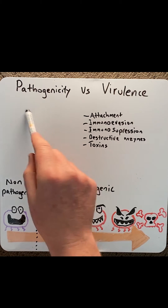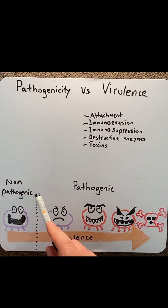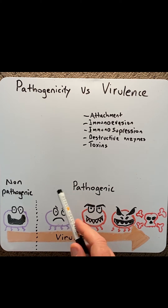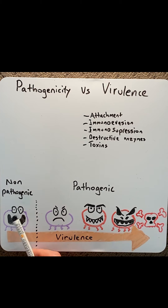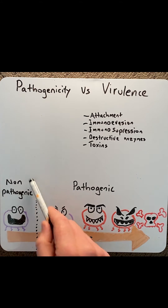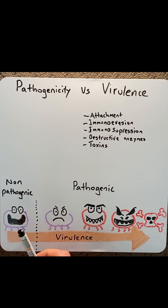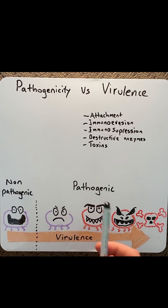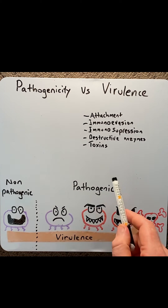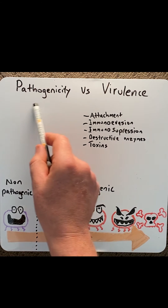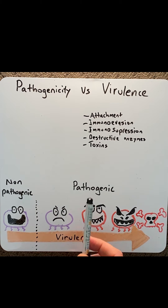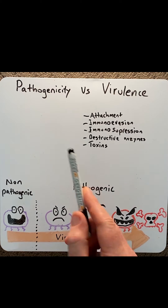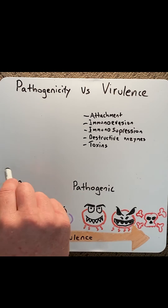Starting with pathogenicity, this term refers to the ability of a microorganism to cause disease. Using the example of bacteria, most bacteria in and on our bodies are harmless — therefore they are non-pathogenic. But occasionally we encounter some nasty bacteria that cause disease, and these are known as pathogenic. So pathogenicity is a qualitative term, meaning these microorganisms either cause disease or they don't.